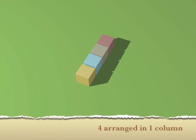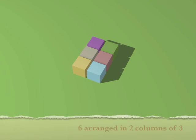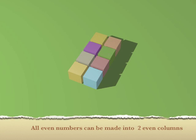Now let's look at the number four. We can have a column or a row of four blocks, but we can also arrange them as two columns of two to form a square. For every other even number you'll see the same thing — six arranged in two columns of three, eight arranged in two columns of four, and so on.